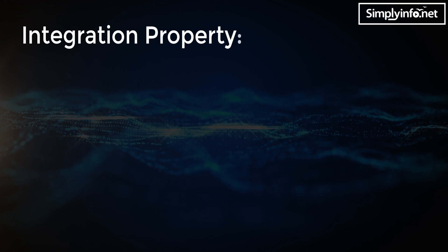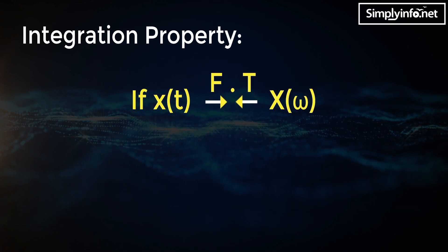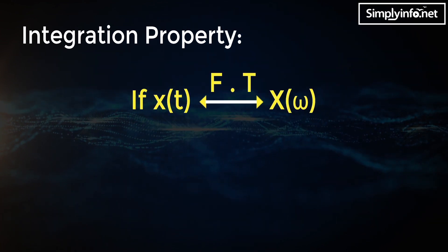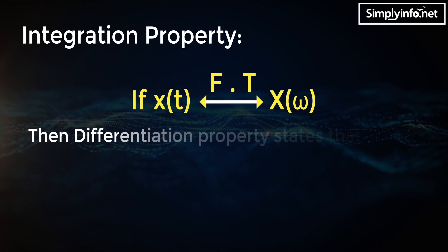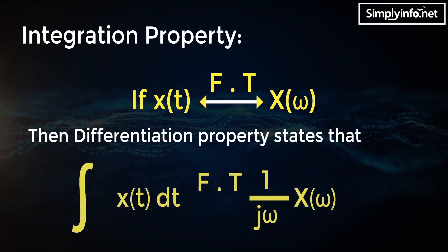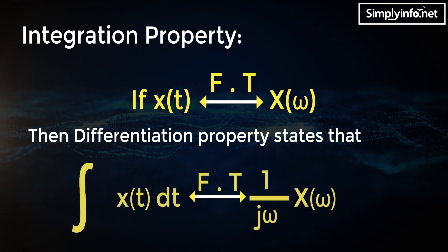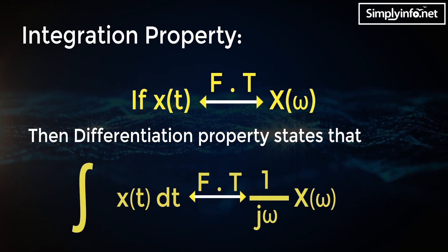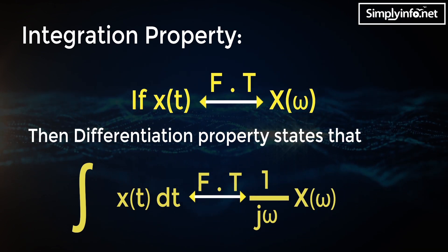Integration property: if Fourier transform of x(t) is X(ω), then the integration property states that Fourier transform of ∫x(t)dt is equal to (1/jω) · X(ω).